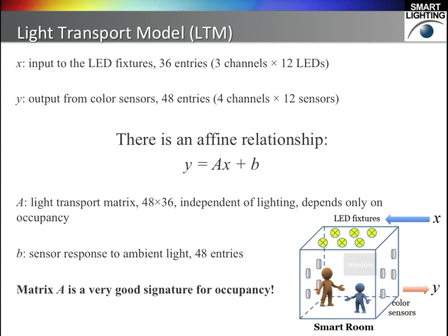If vector X is the input signal to the LEDs, and vector Y is the output from the color sensors, we find that there is an affine relationship between X and Y. If there is one mathematical equation you must know in our work, then this is the one — it is extremely important. The matrix A is called the light transport matrix, and this matrix is independent of the lighting condition. It only relies on the occupancy, thus it is a very good signature of the occupancy. If you are using different fixtures or different sensors, the affine relationship may not be true, but you can always calibrate your fixtures and sensors to make it true, because this equation is from optics and photometry.